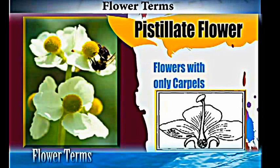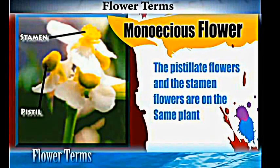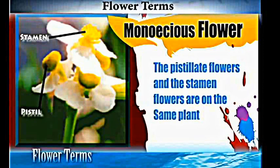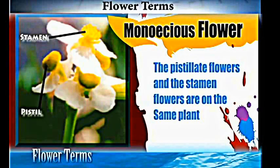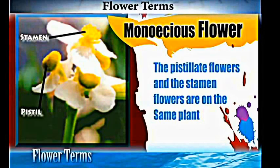Another term is 'monoecious.' Monoecious refers to a plant where the pistillate and staminate flowers are on the same plant. The pistillate flower and the staminate flower may not be together on the same location, but they are on the same plant — that is referred to as monoecious.